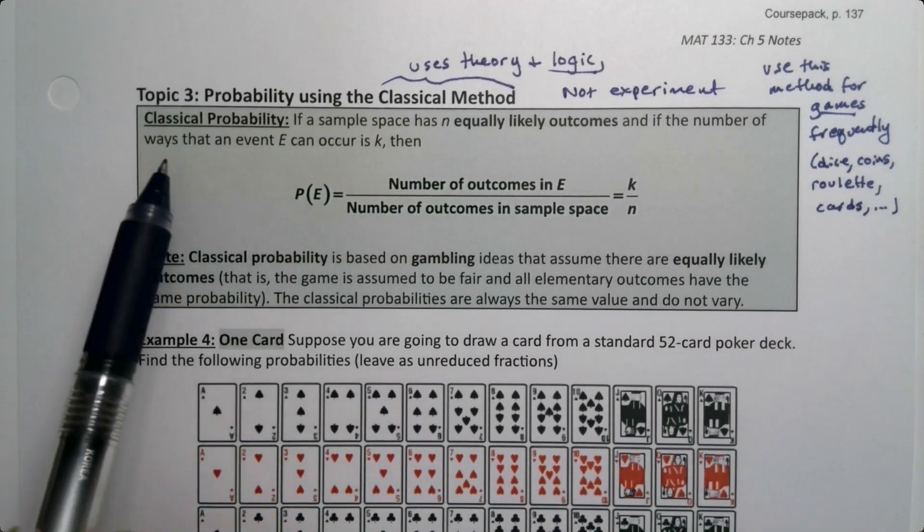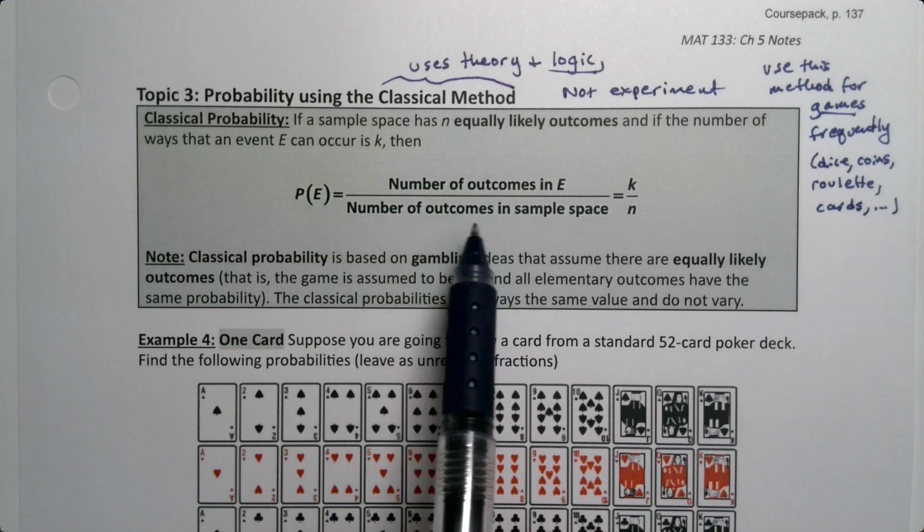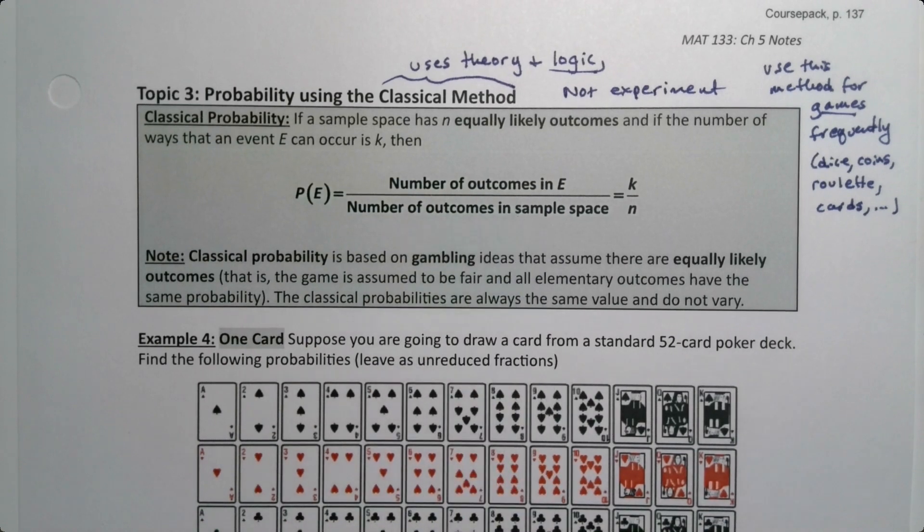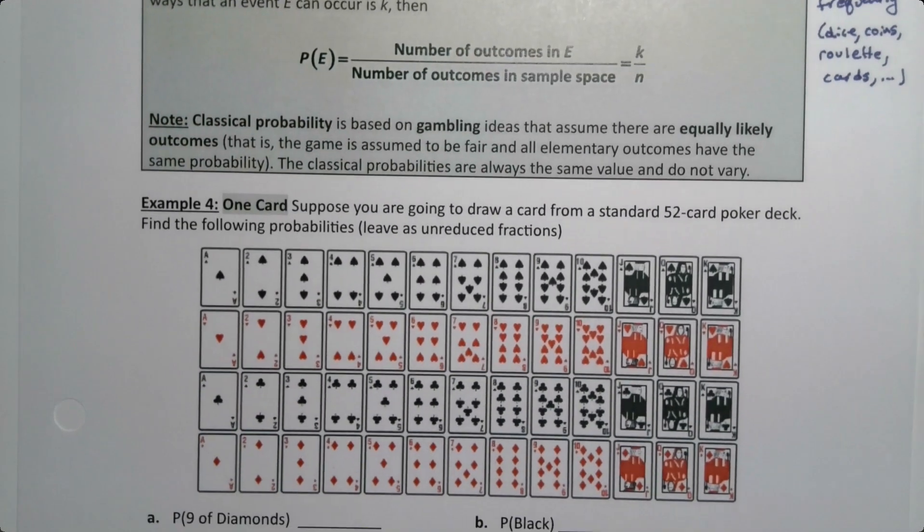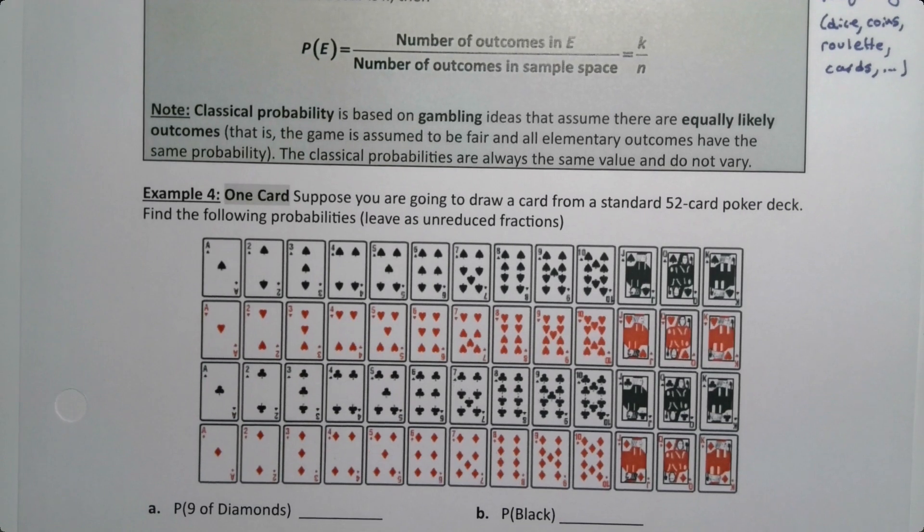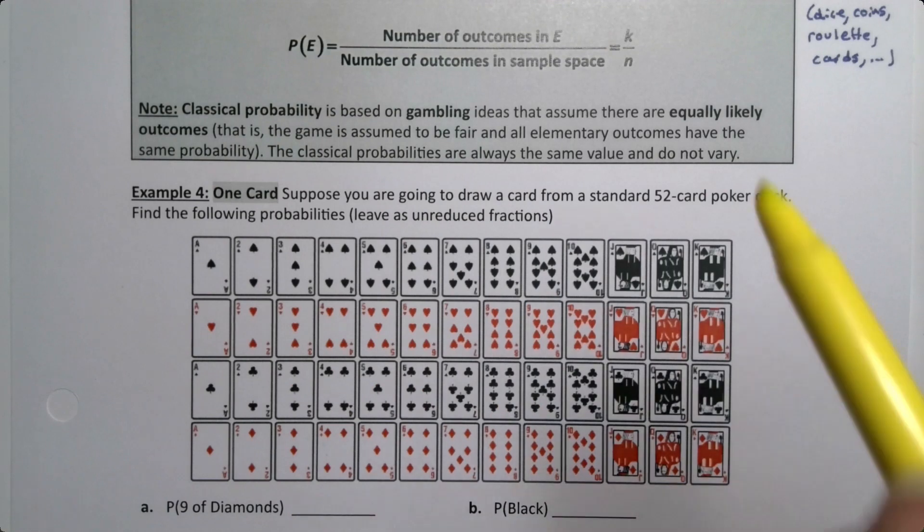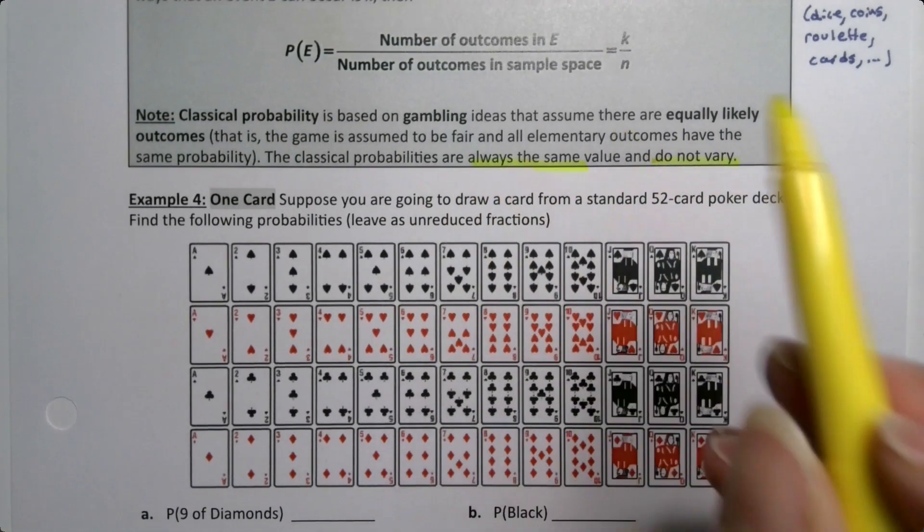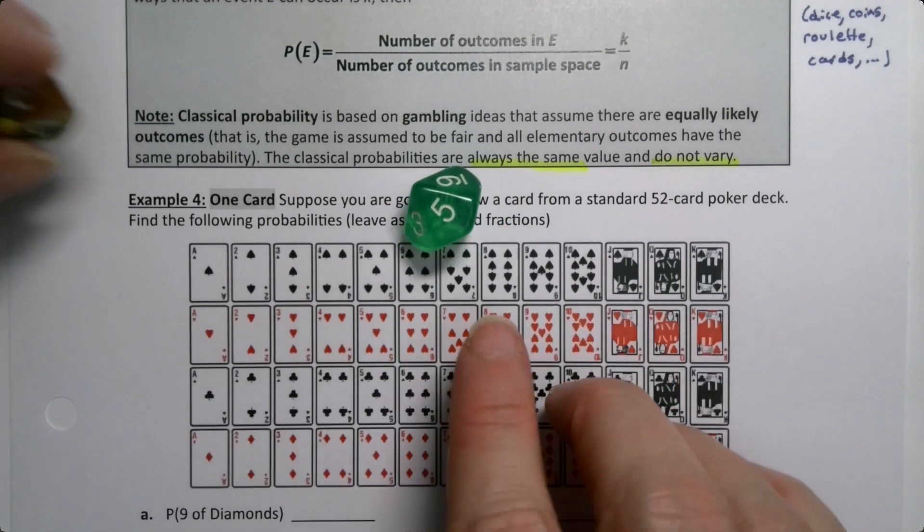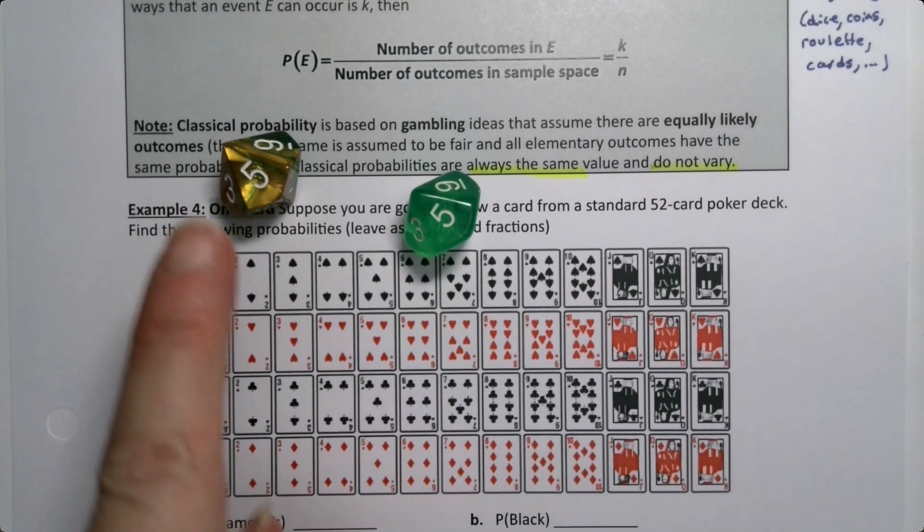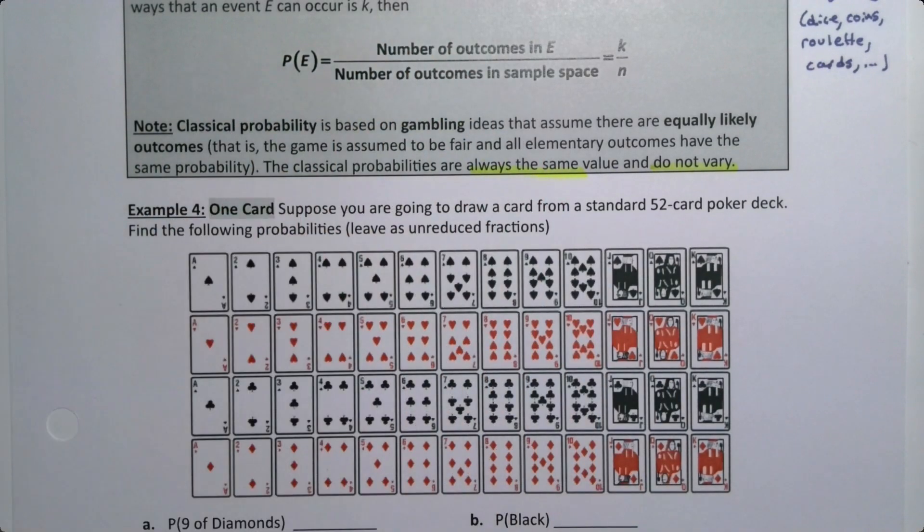So what you do is you take the number of outcomes that are in event E and you divide it by the number of outcomes in the sample space. And this works because in gambling, you're assuming basically everything's equally likely, that the die is not loaded. Empirical probabilities vary from data set to data set, but the classical probabilities do not. Every ten-sided die has the same probability of a five.